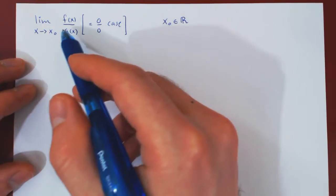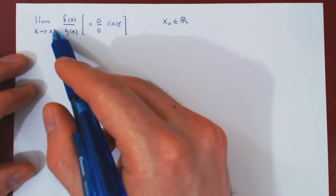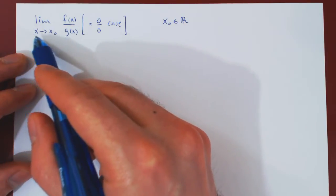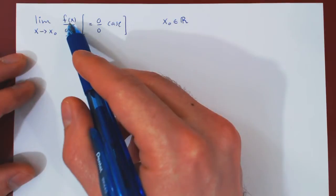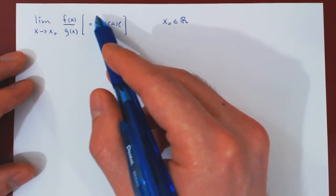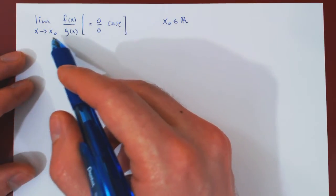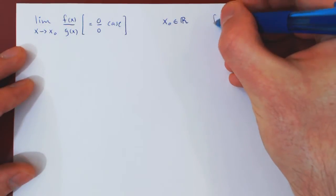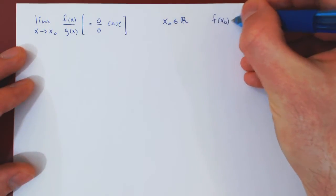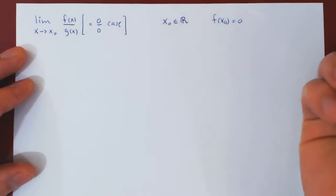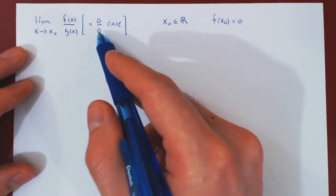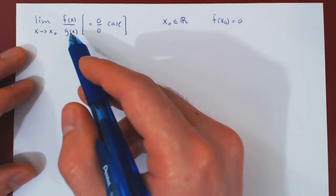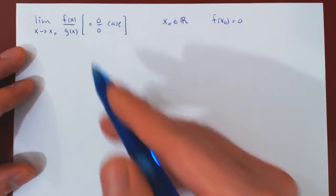As x approaches x₀, f(x) by assumption is getting closer to 0, so we can assume that f(x₀) is simply 0. Similarly, as x approaches x₀, g(x) is approaching 0, so we can also assume that g(x₀) equals 0.